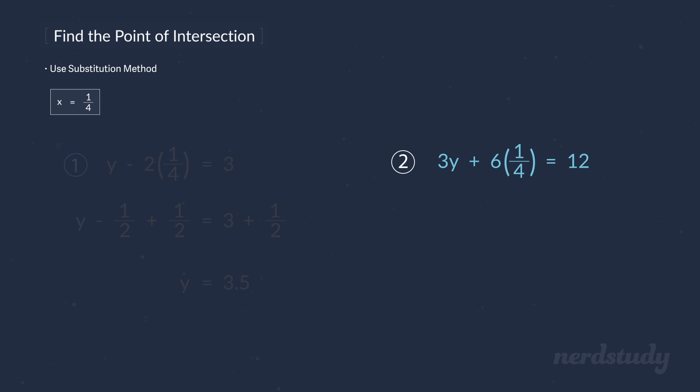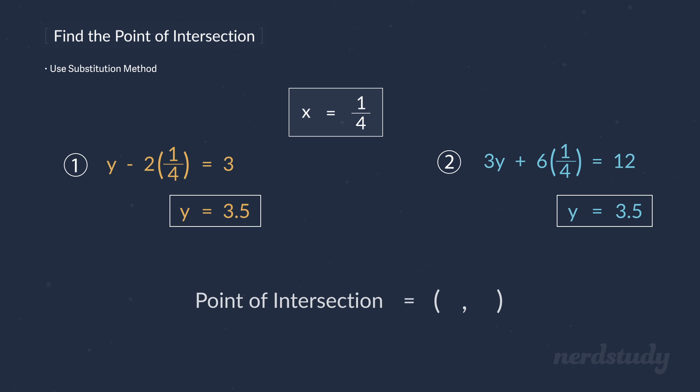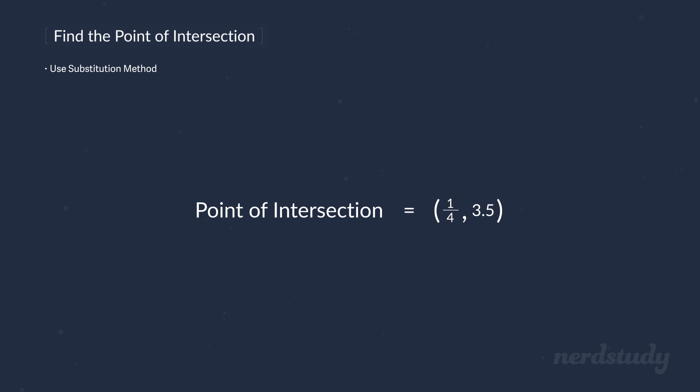Now, does the other equation also produce 3.5 for y when x is 1 over 4? Let's go ahead and solve this as well. Simplifying this gives us 3y plus 3 over 2 equals 12. If we subtract both sides by 3 over 2, we get 3y equals 12 minus 3 over 2. If we compute 12 minus 3 over 2, we get 10.5. Divide both sides by 3, which gives us y equals 10.5 over 3. 10.5 over 3 is equivalent to 3.5. So it looks like when x is 1 over 4, y is 3.5 for both equations, which means that this is an intersection point, and that this is our solution.